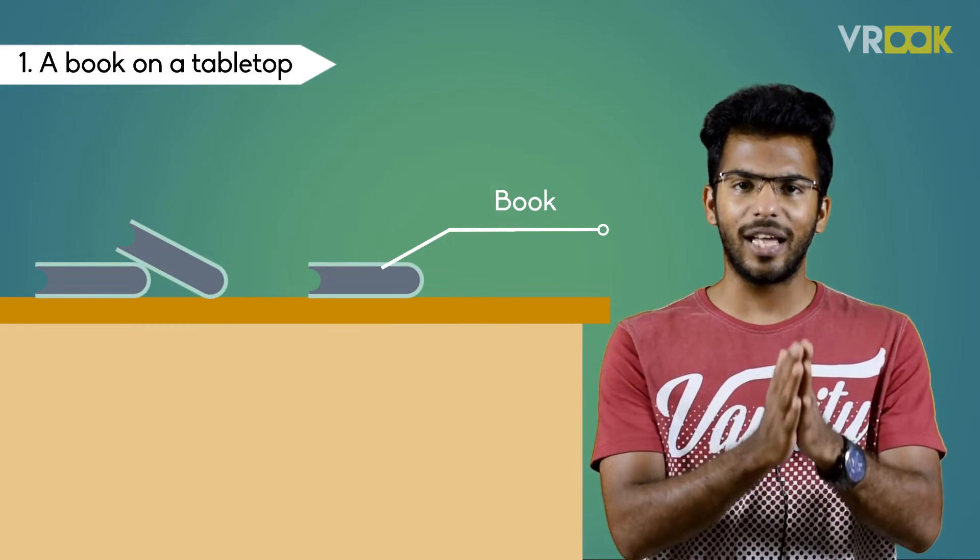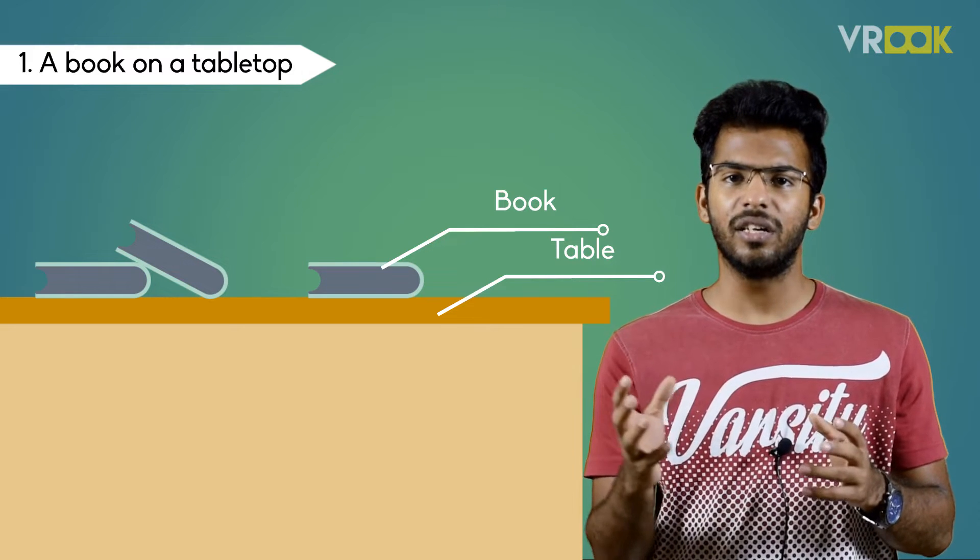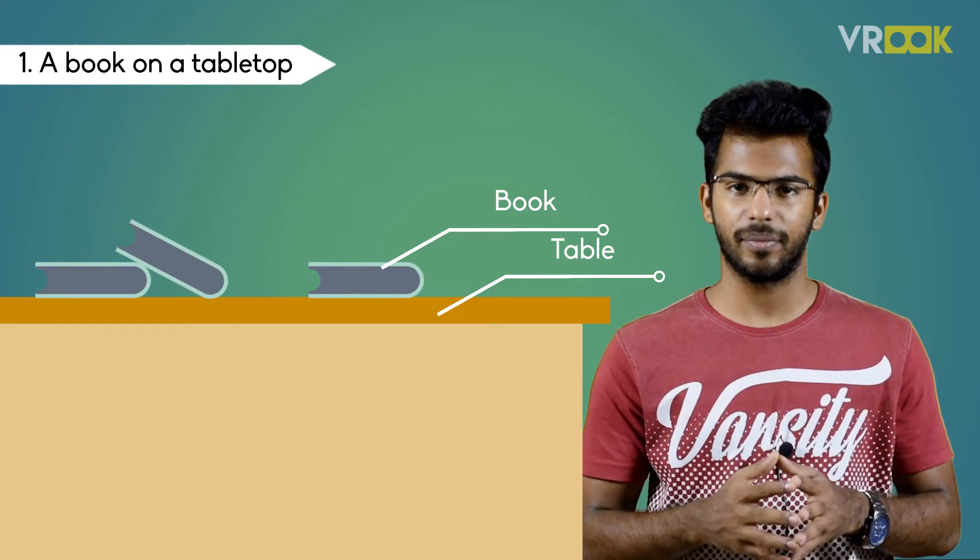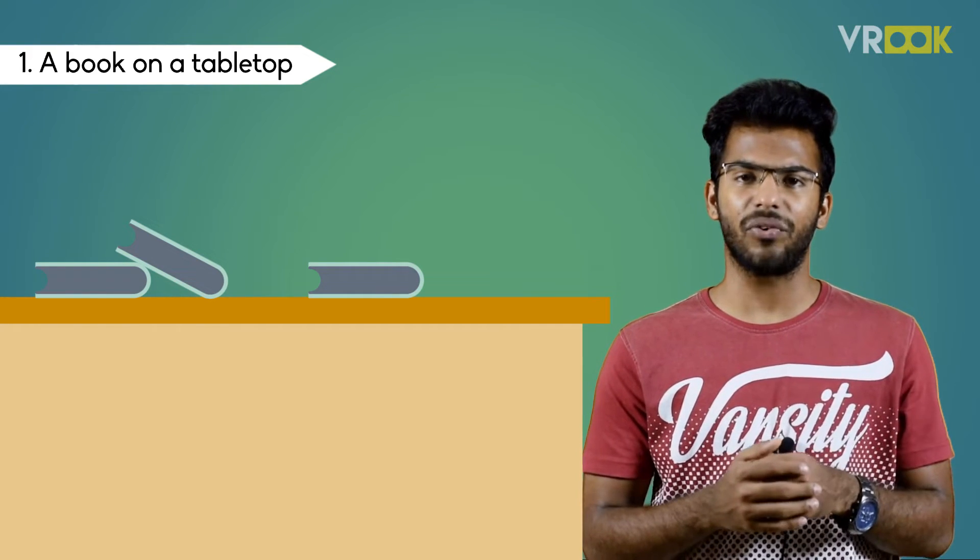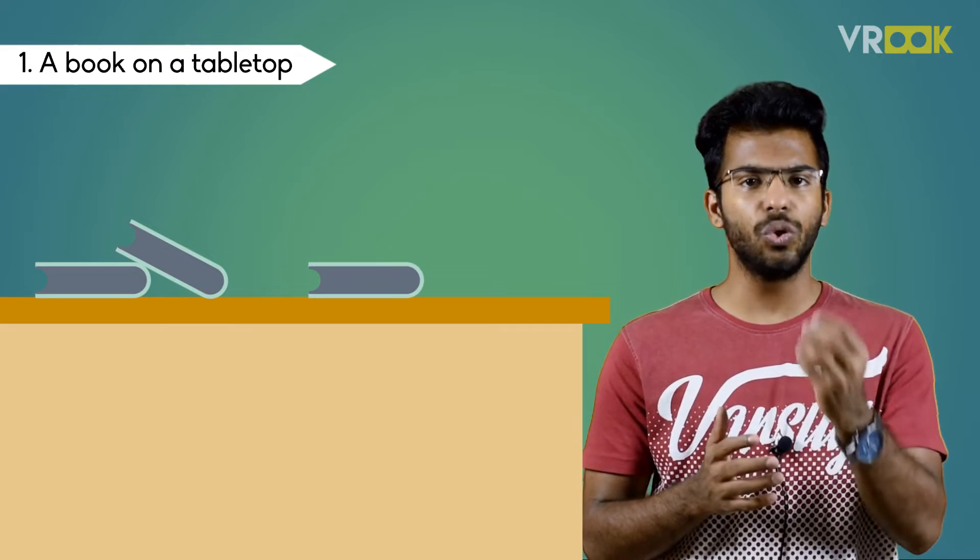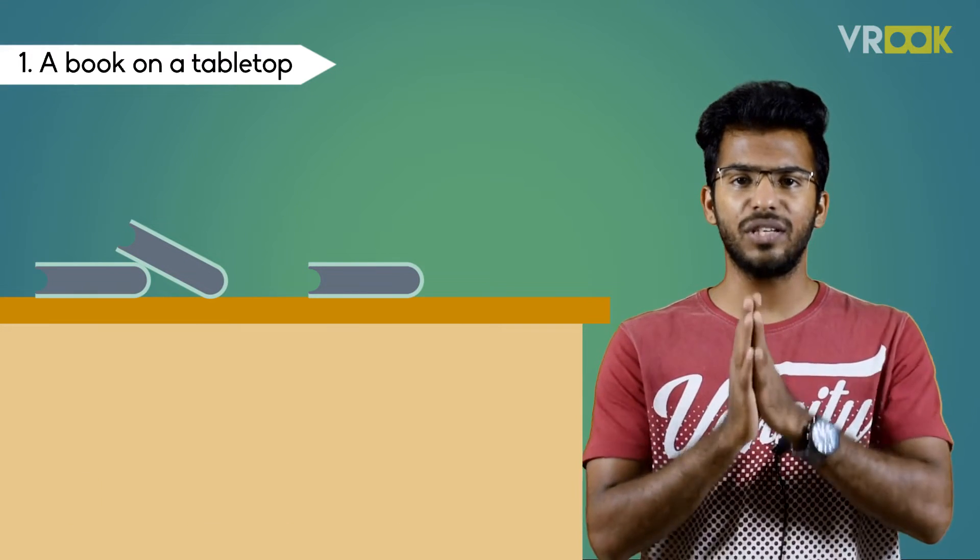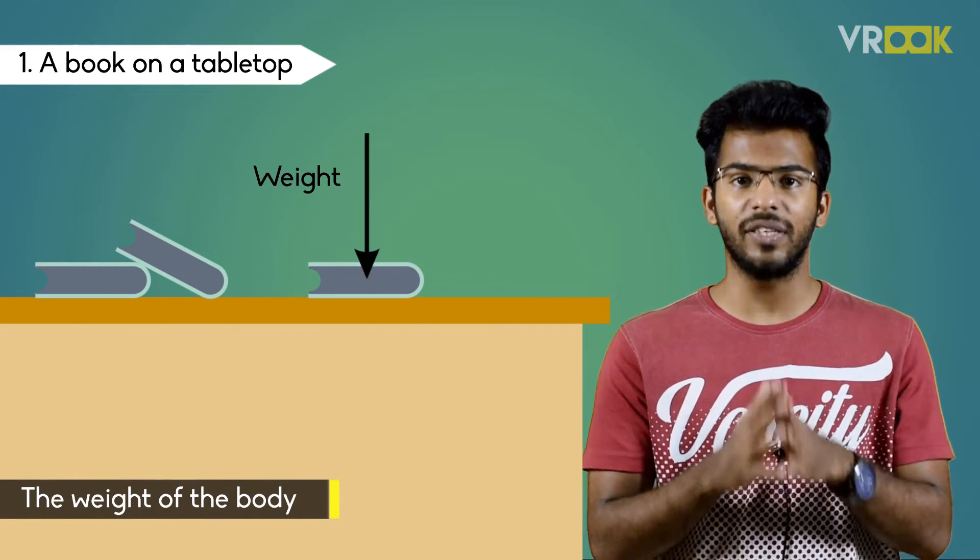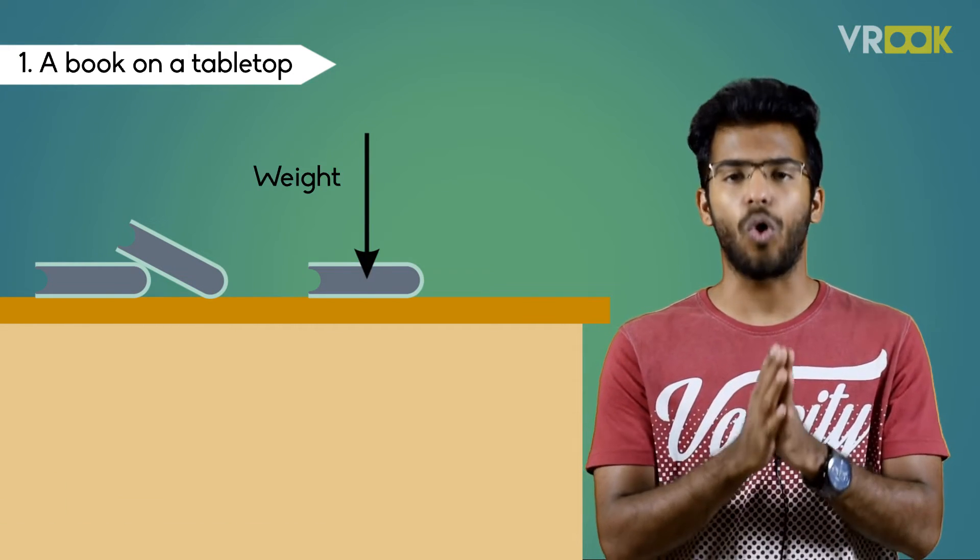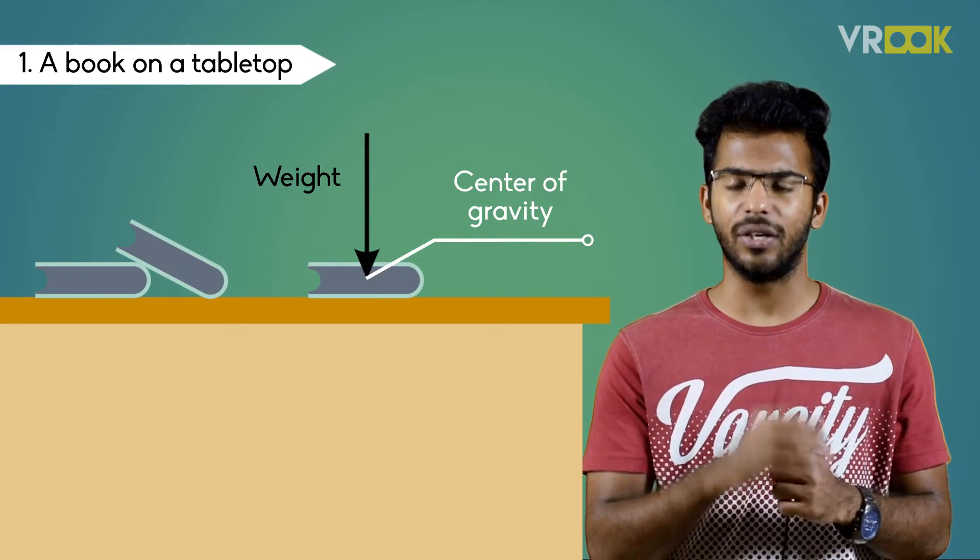If we have to analyze the forces on the table then the FBD will be written for it. The second step in writing the FBD is to know the forces that are acting on the book. First force that should be represented is the weight of the body which acts downwards always. It should be drawn at the center of gravity of the object.